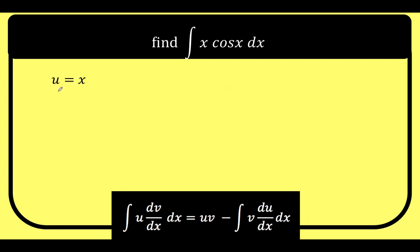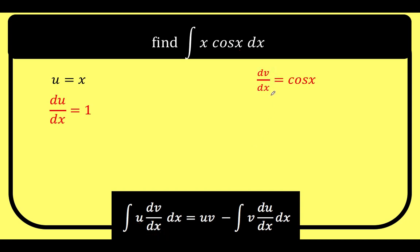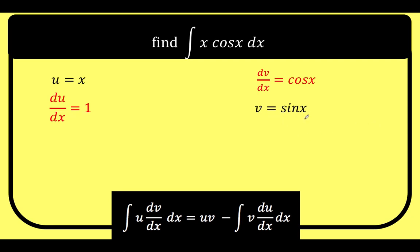Let's begin by letting u equal x. If u equals x, then du/dx equals 1. Choosing x as u implies that cosine of x will be our dv/dx. So we let dv/dx equal cosine of x. To solve for v, we take the antiderivative of both sides: the antiderivative of cosine x dx is sine of x, so v equals sine x.